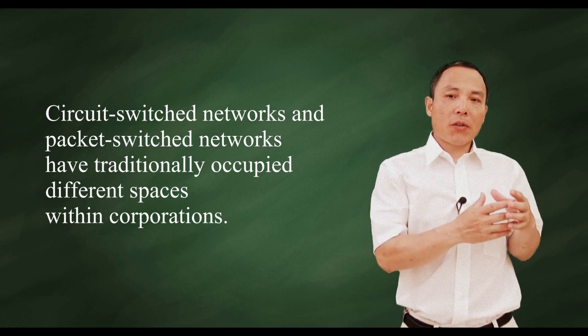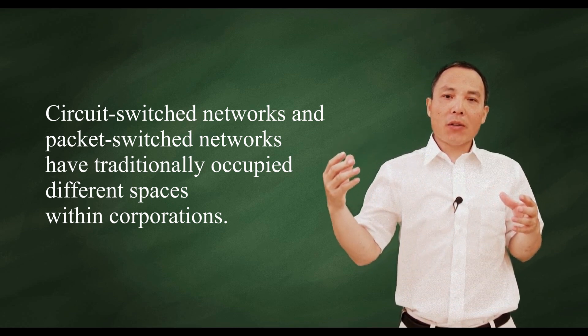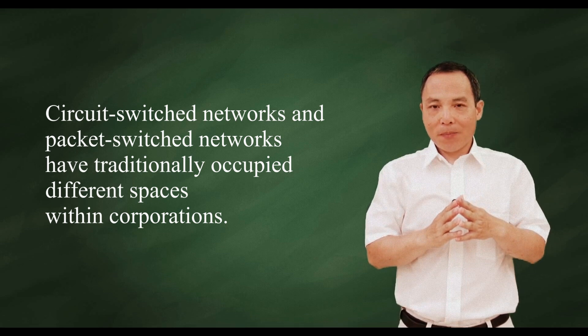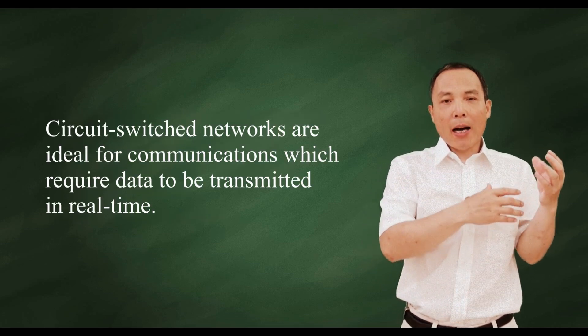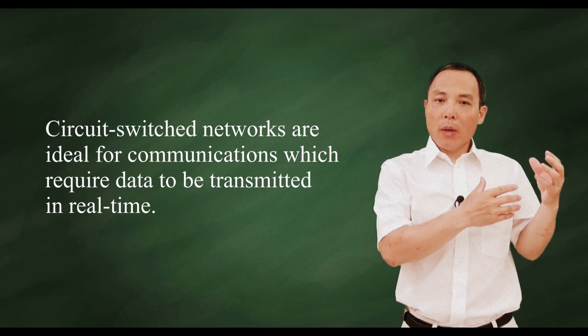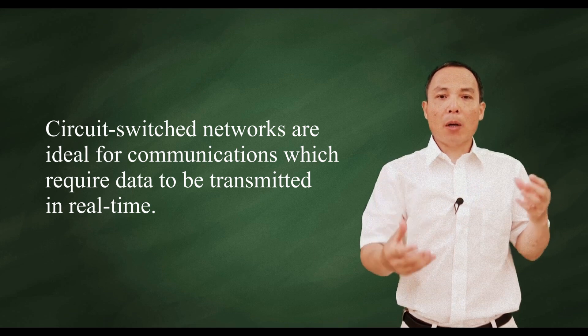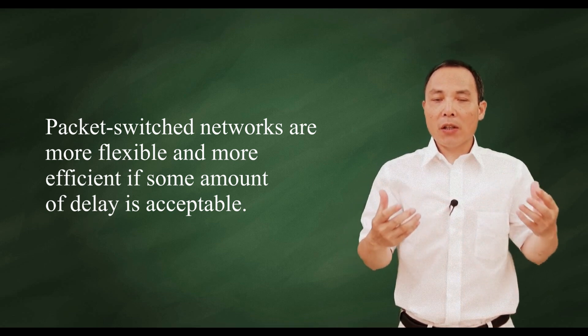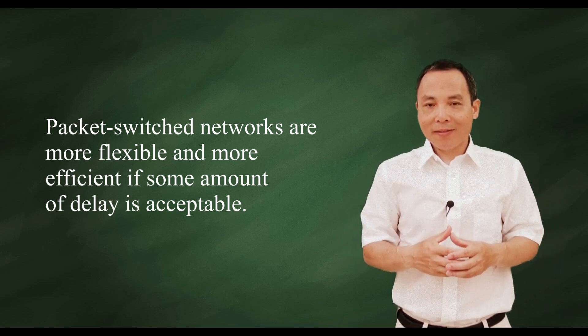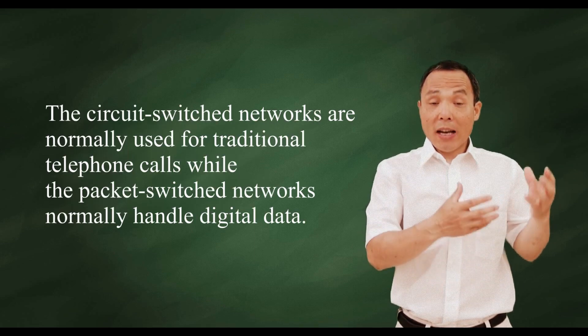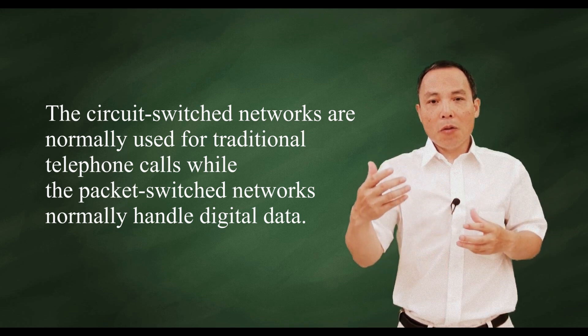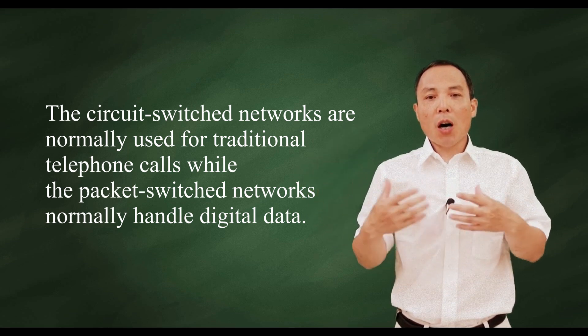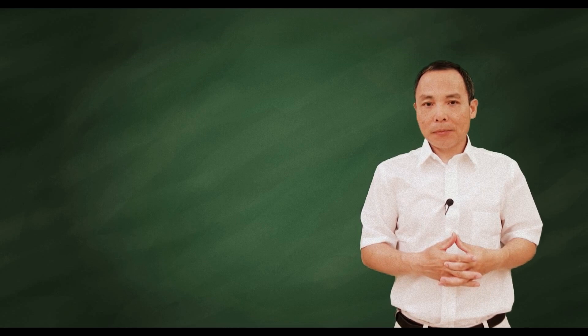The circuit-switched networks and packet-switched networks have traditionally occupied different spaces within corporations. The circuit-switched networks are ideal for communications which require data to transmit in real-time, while the packet-switched networks are more flexible, more efficient if some amount of delay is acceptable. The circuit-switched networks are normally used for traditional telephone calls, while the packet-switched networks normally handle digital data.